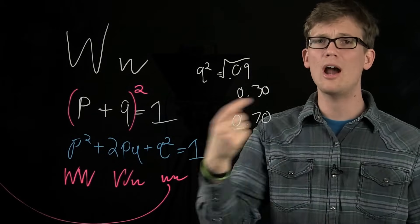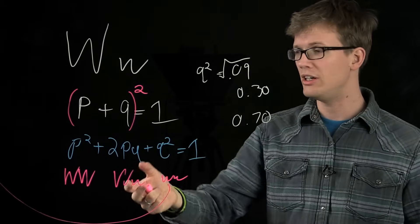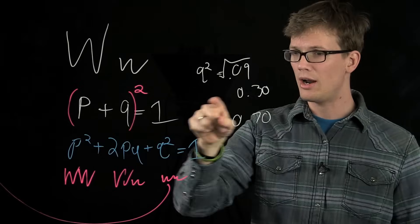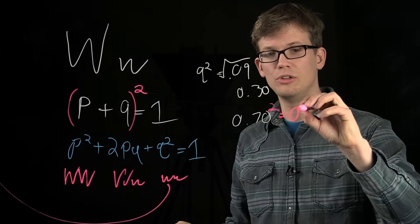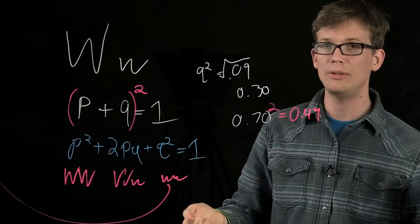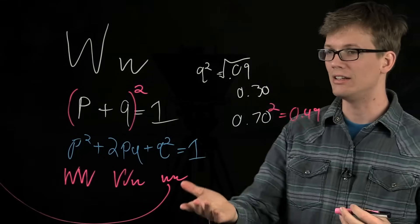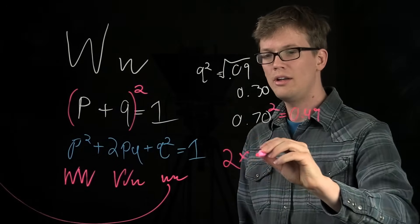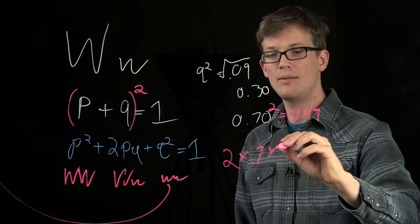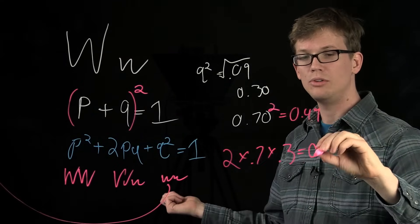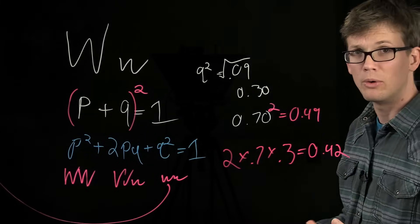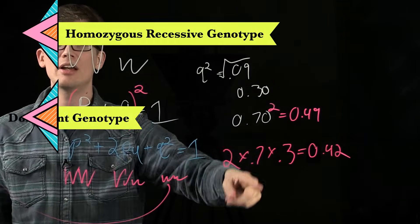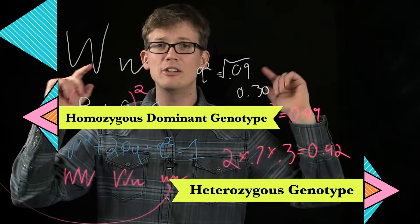Using our Hardy-Weinberg equation, we can go beyond the frequency of the alleles and actually talk about the frequency of the genotypes. The frequency of WW homozygous dominant is p squared: 0.70 squared equals 0.49, so 49% of the population is homozygous dominant. And now the math gets even easier because we know p and q. To figure out how many heterozygotes there are, we do 2 times p (0.7) times q (0.3), which equals 0.42. So: 9% of the population homozygous recessive, 49% homozygous dominant, and 42% heterozygous displaying wet earwax but with that little w in there as well.